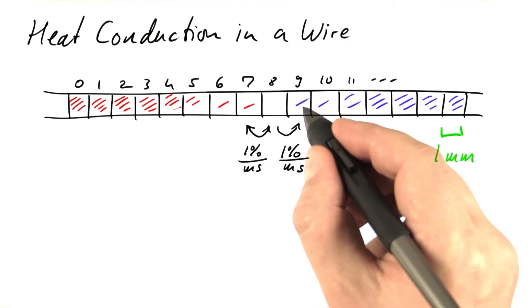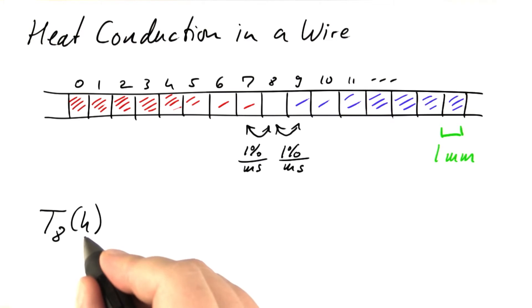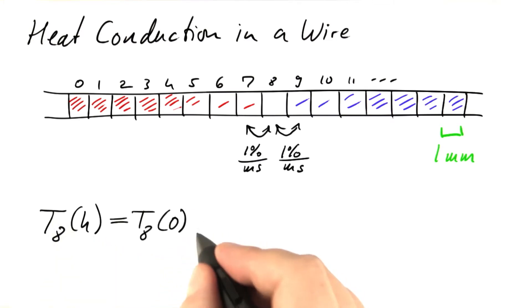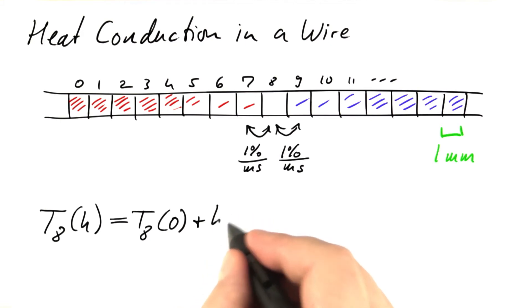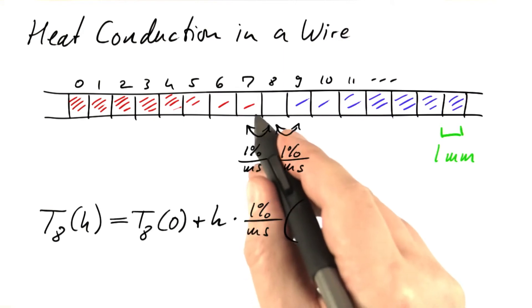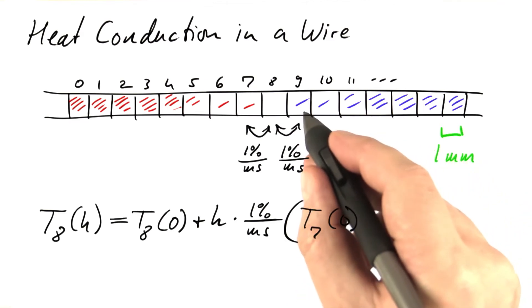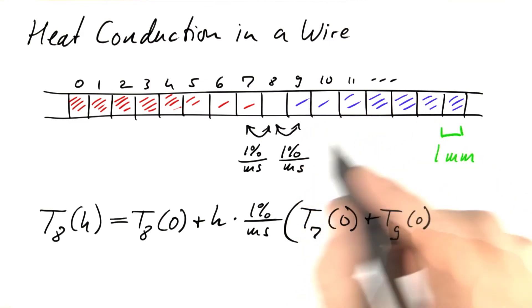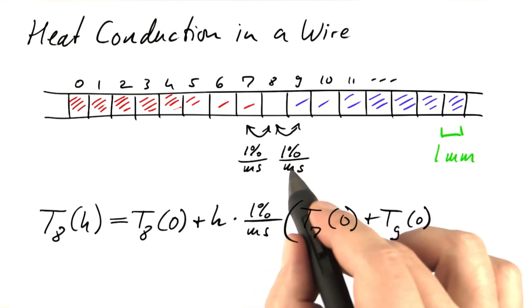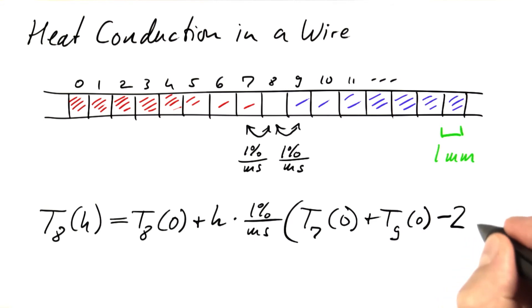So after a short amount H of time, the temperature of compartment number eight will be its initial temperature plus that amount of time times one percent per millisecond. So we're gaining one percent per millisecond from compartment number seven, and we're gaining one percent per millisecond from compartment number nine. But we're losing one percent per millisecond to the left and to the right, so we're losing twice that percentage.